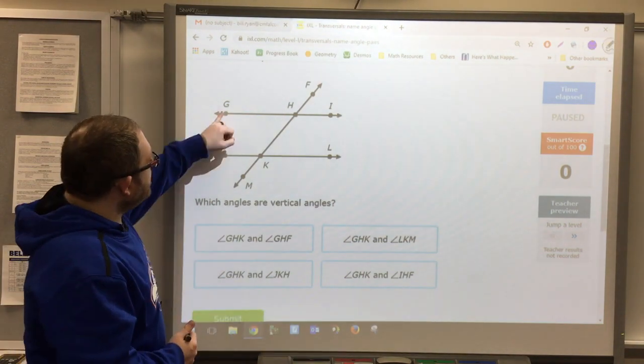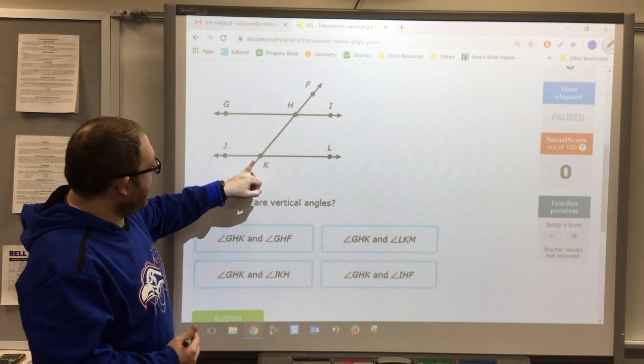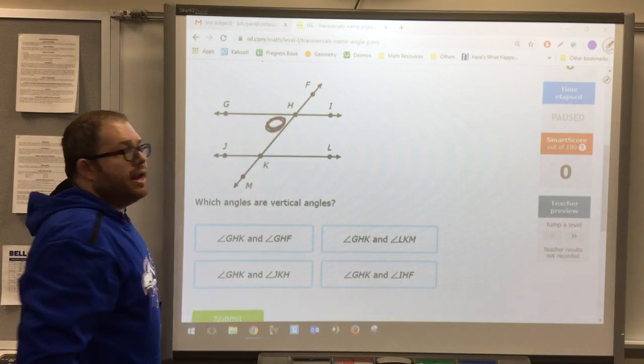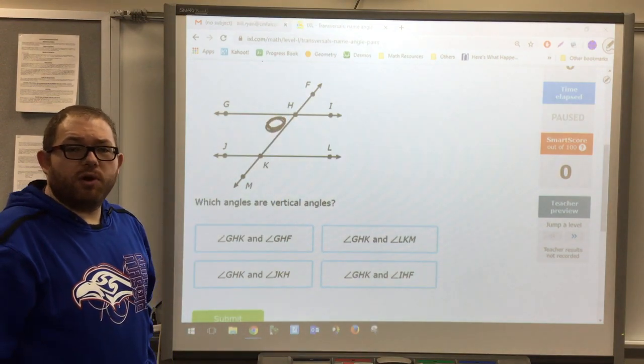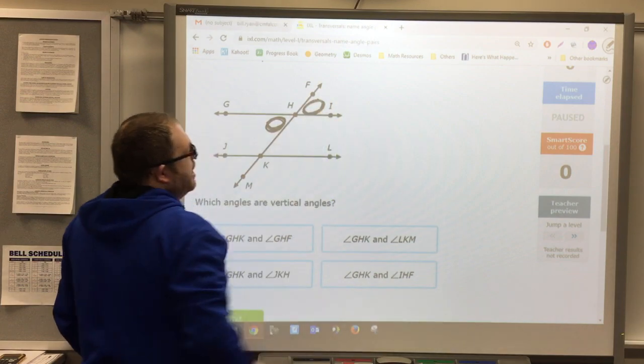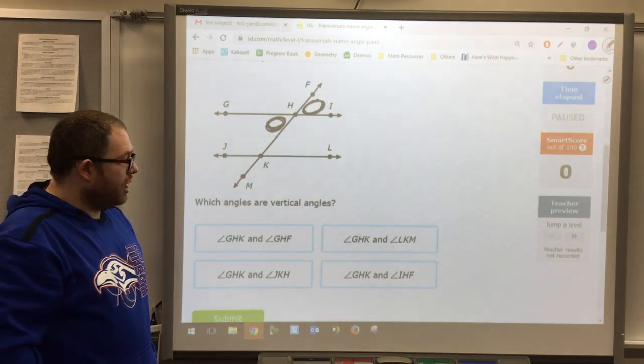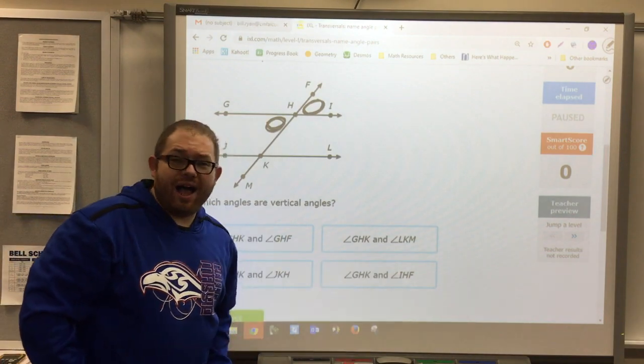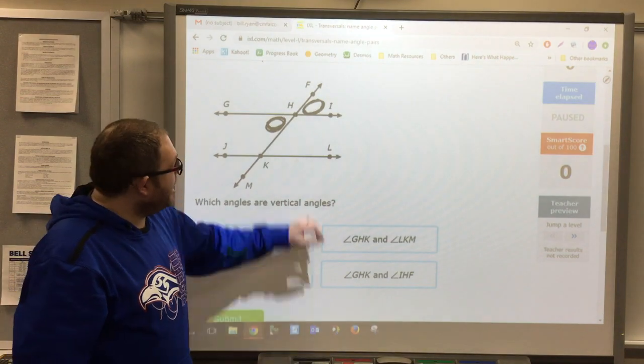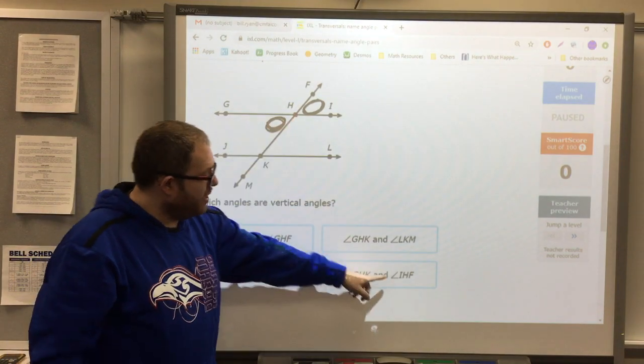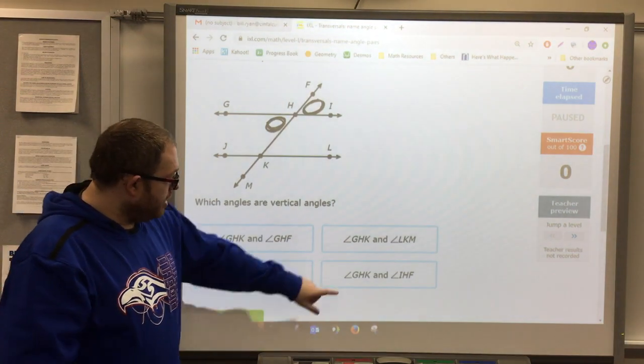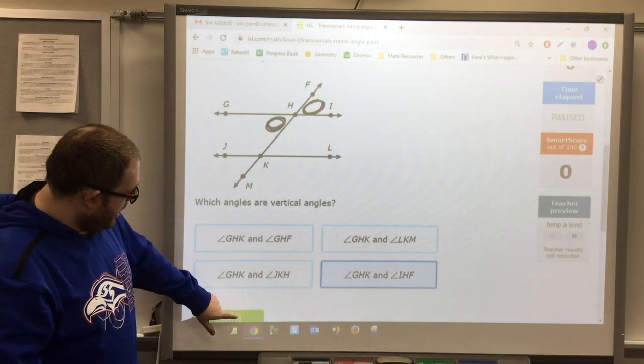For example, GHK is right here. And I need to pick which angle would be vertical to that. So that means across from it. And that would be FHI. They've called it IHF. Remember that you can switch the order as long as the angle itself is the middle letter. These are like multiple choice questions in this skill. I simply click and submit.